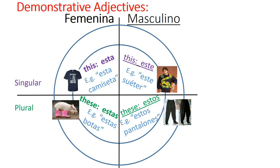Now let's move on to the outer circle — how we say 'that,' referring to things farther away. The feminine singular form is esa. So 'this shirt' is esta camiseta, but 'that shirt over there' is esa camiseta. The masculine singular form should be eso, but once again it's ese. So este suéter means 'this sweater,' but ese suéter means 'that sweater over there.' Notice the pattern: to tell the difference between 'this' and 'that,' just take out the T. If the T is in there, it's 'this'; if the T is gone, it's 'that.'